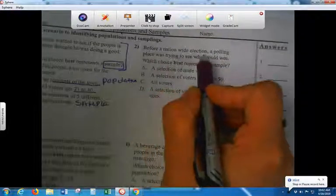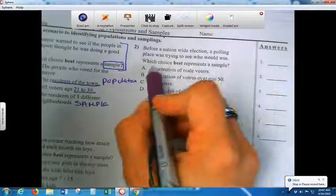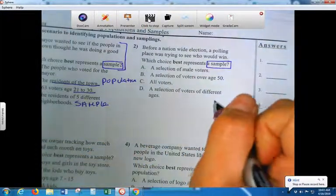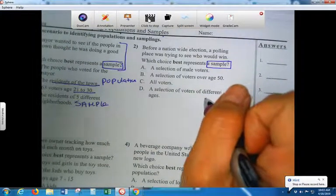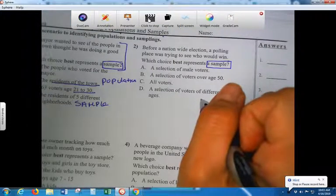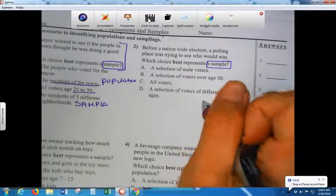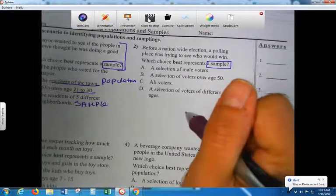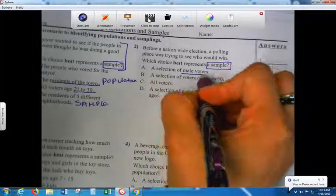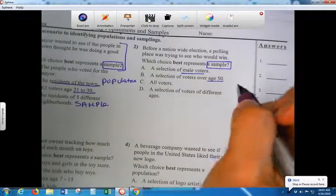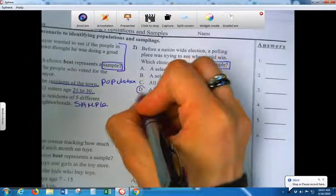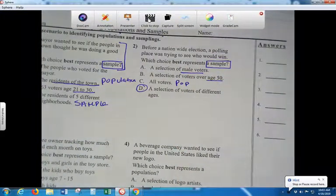Before a nationwide election, a polling place was trying to see who would win. Which choice best represents a sample? So read it. What do you guys think? It's not A or B because it would be males here. It's over age 50, right. All voters is population, so therefore D. So you can do process of elimination but you have to start doing these on your own. Don't just wait for me.